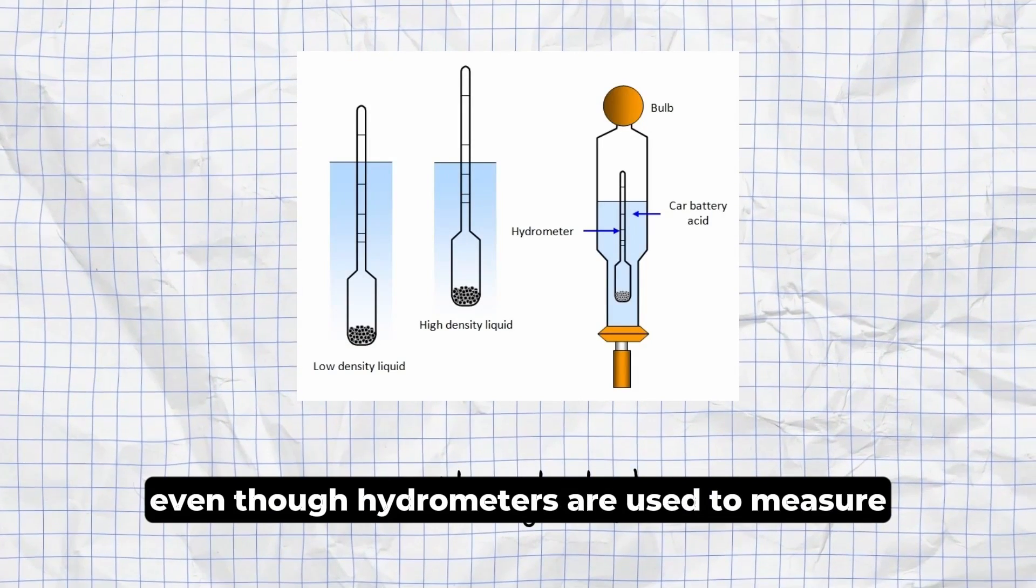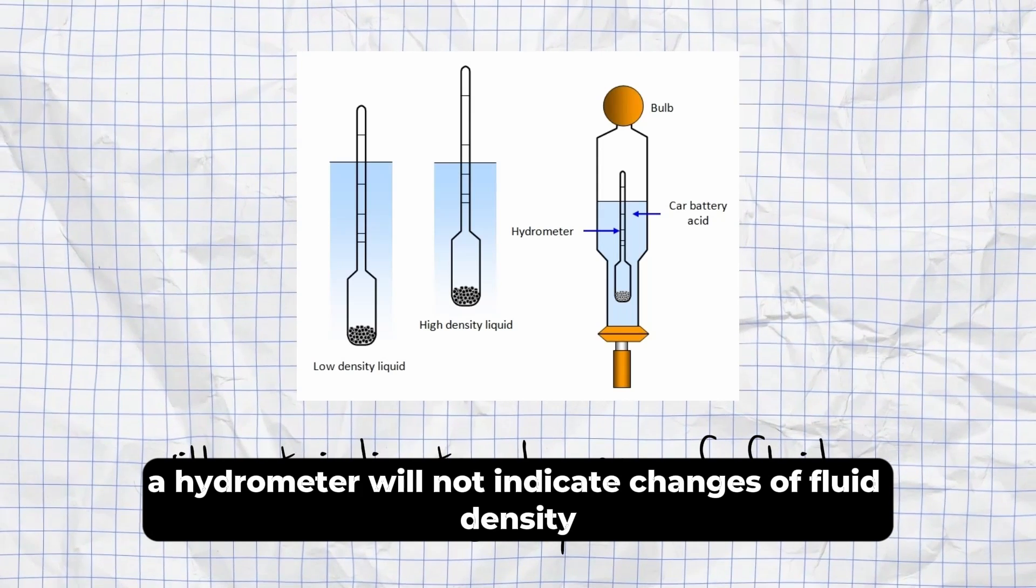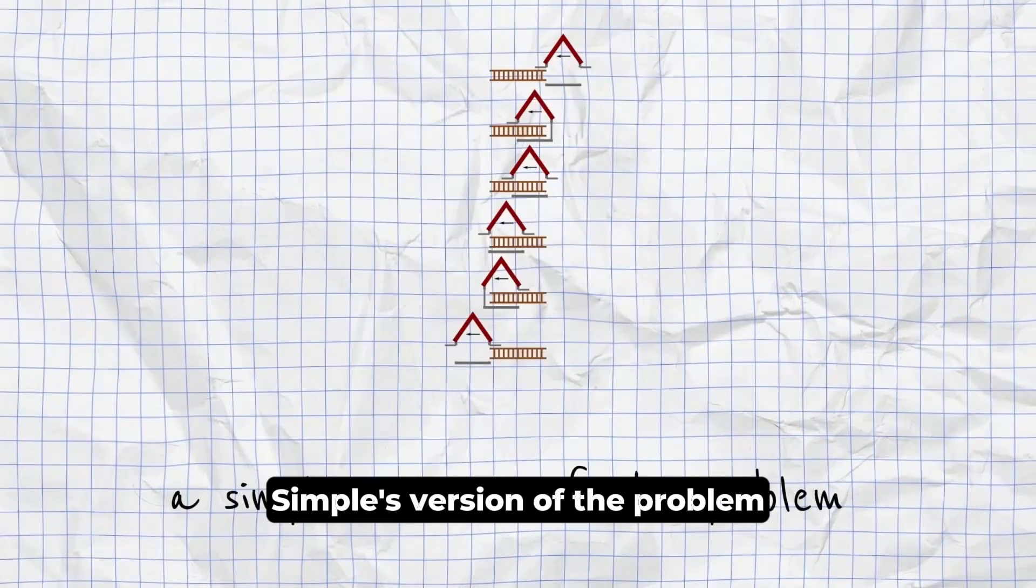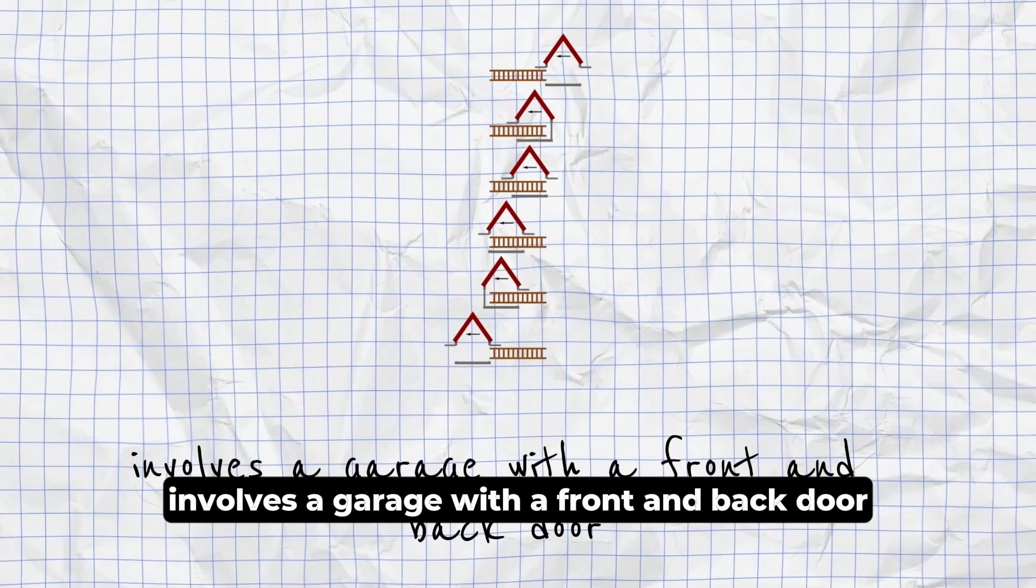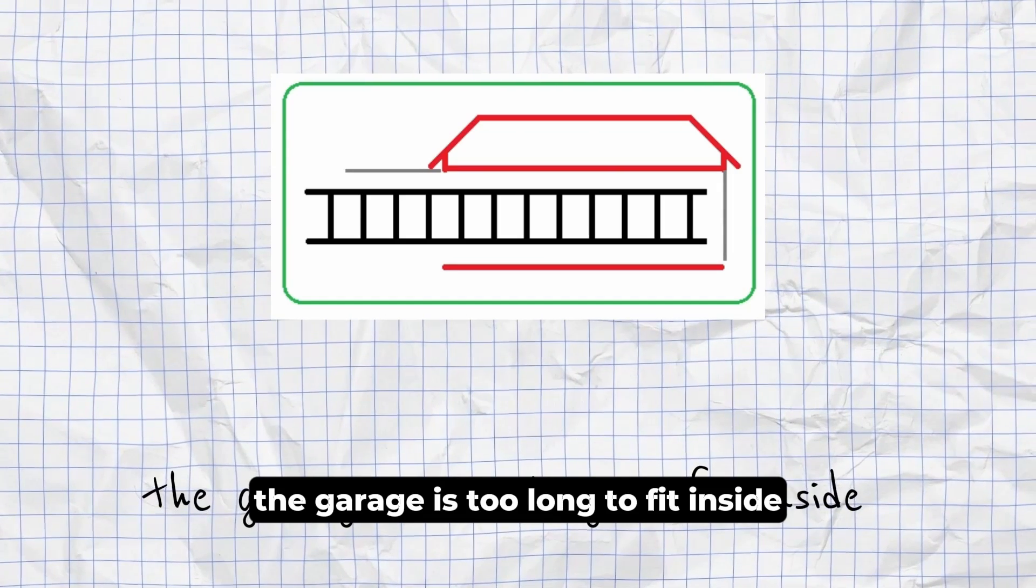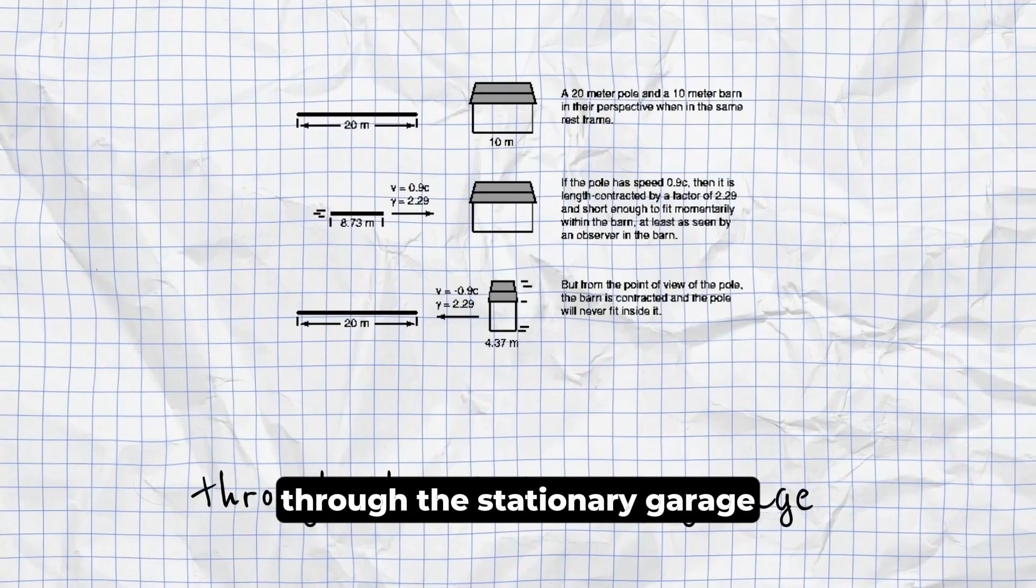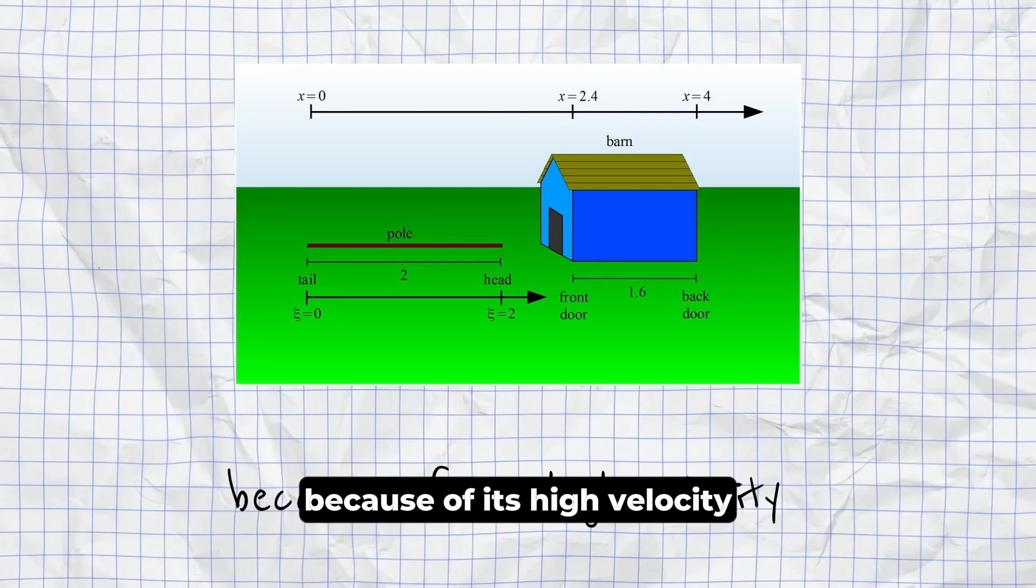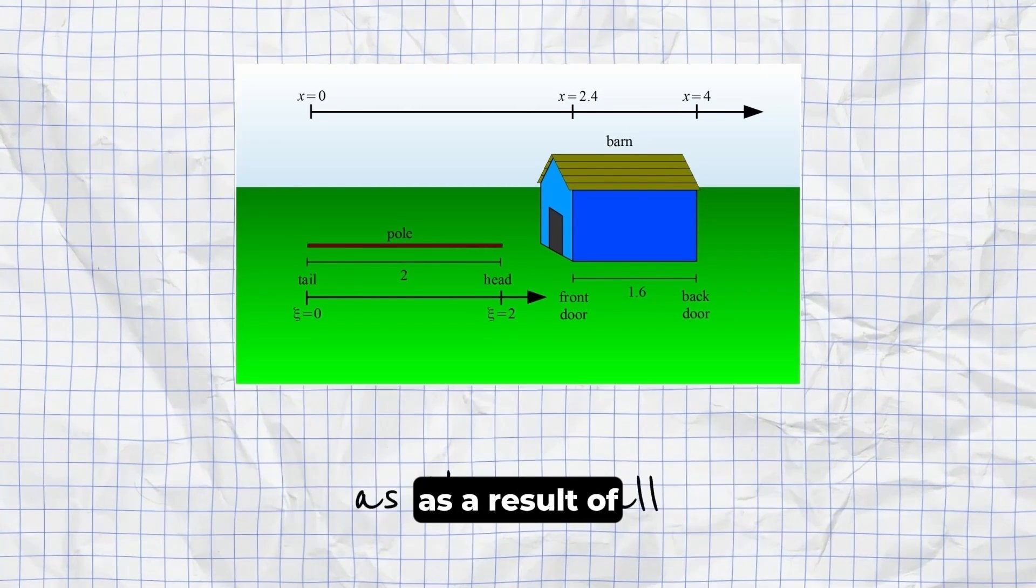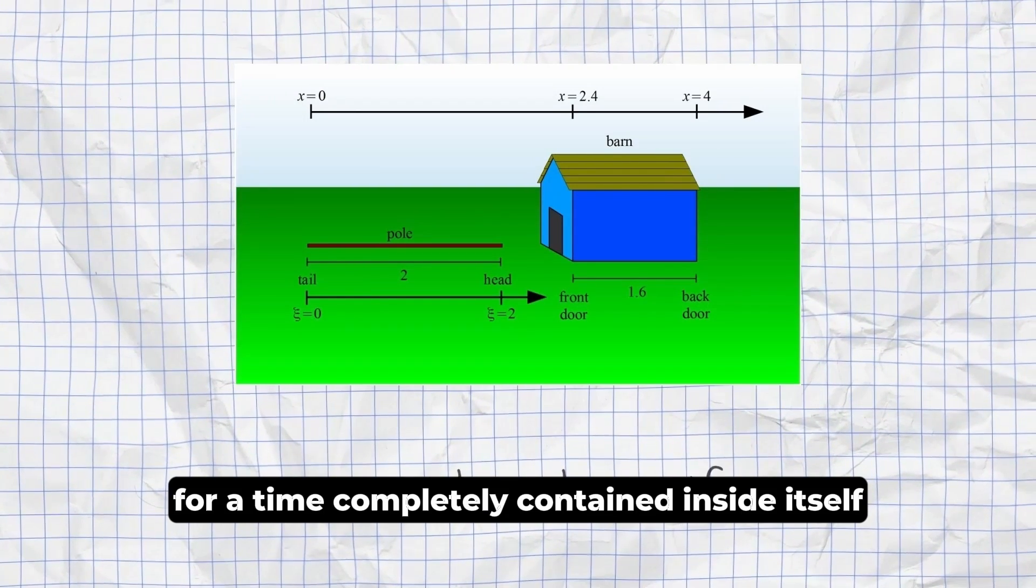Elevator Paradox. Even though hydrometers are used to measure fluid density, a hydrometer will not indicate changes of fluid density caused by a changing atmospheric pressure. Ladder Paradox. The simplest version of the problem involves a garage with a front and back door, which are open. When at rest with respect to the garage, it is too long to fit inside. Now move the ladder at a high horizontal velocity through the stationary garage. Because of its high velocity, the ladder undergoes a relativistic contraction and becomes slightly shorter. As a result, the ladder passes through the garage for a time completely contained inside itself.